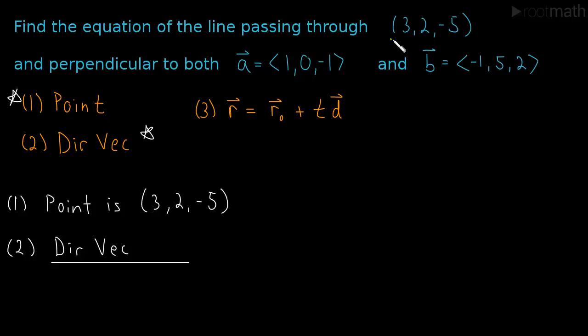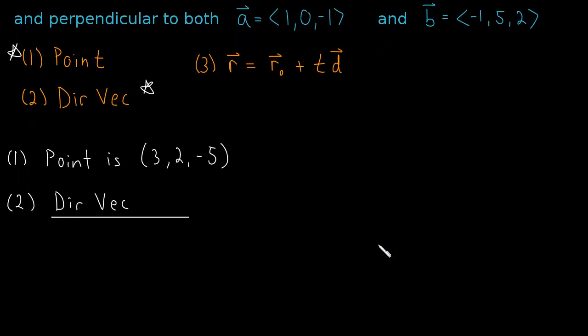So for us, how do we find a direction vector? We kind of know the direction of the line implicitly with words. We know that the direction is going to be the direction that's perpendicular to both A and B. But in order to get that as a vector, how do we do that? Well, let me draw you something here. If this is A and this is B, then how do we get a vector that's perpendicular to both A and B?